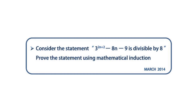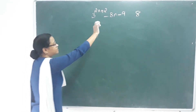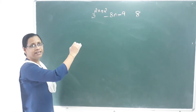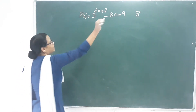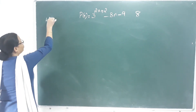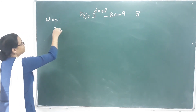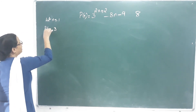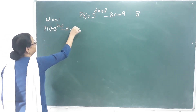Consider the statement: 3 raised to 2n plus 2 minus 8n minus 9 is divisible by 8. The statement is P of N. Let n equal to 1. P of 1 equals 3 raised to 2 plus 2 minus 8 minus 9.